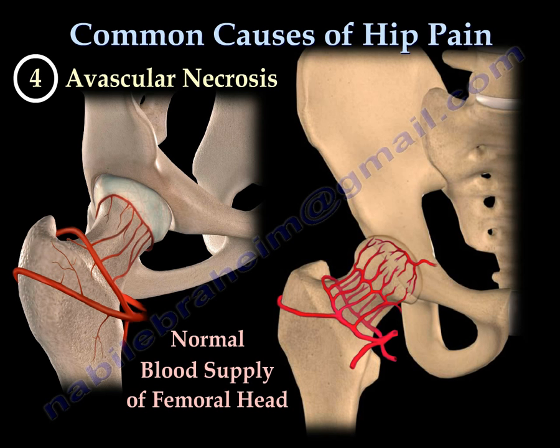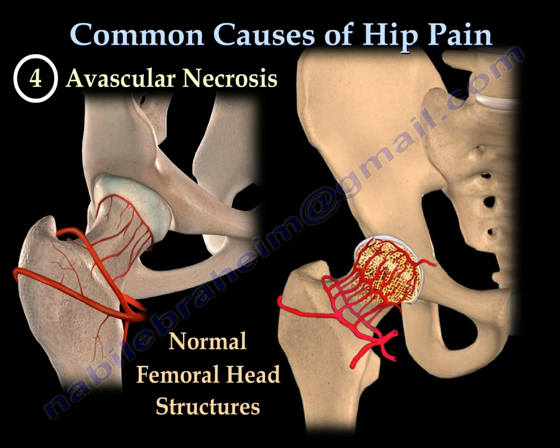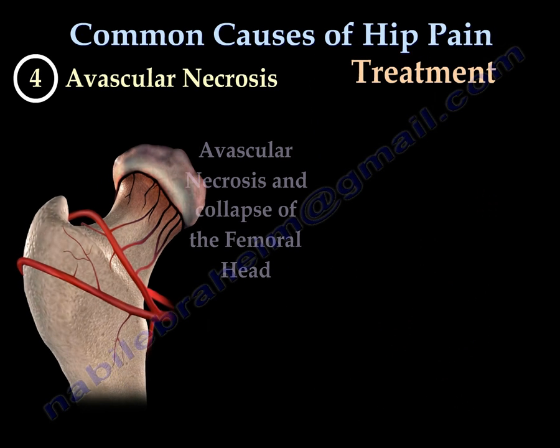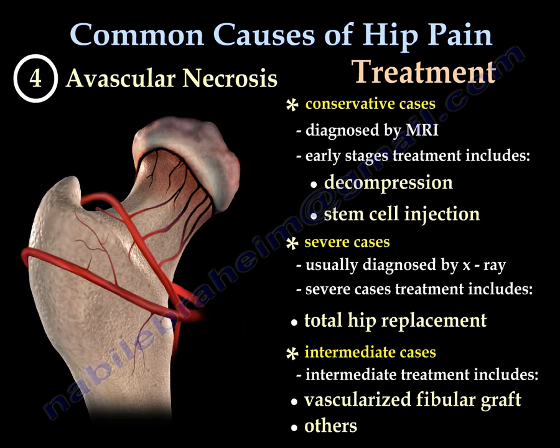Avascular necrosis is due to death of a segment of the bone when the blood supply of the femoral head is interrupted. Early cases are diagnosed by MRI and treated by decompression, stem cell injection, or drilling. Intermediate cases are treated by vascularized fibular graft. Severe cases are diagnosed by X-rays and usually require total hip replacement.